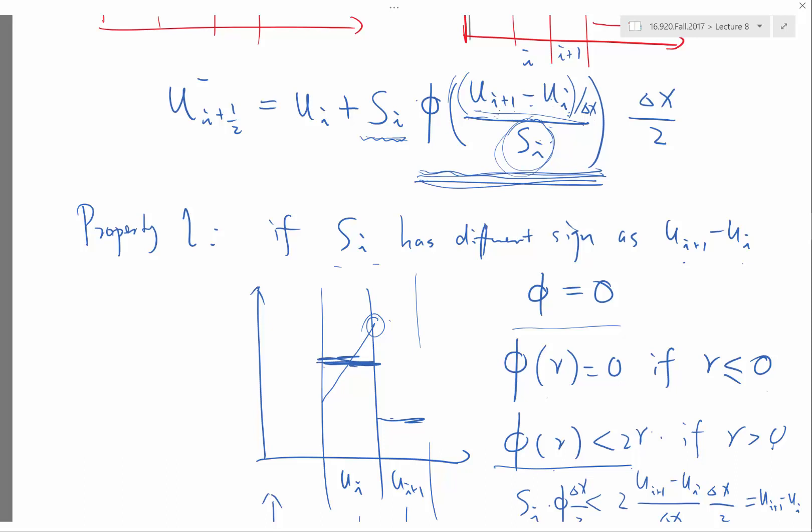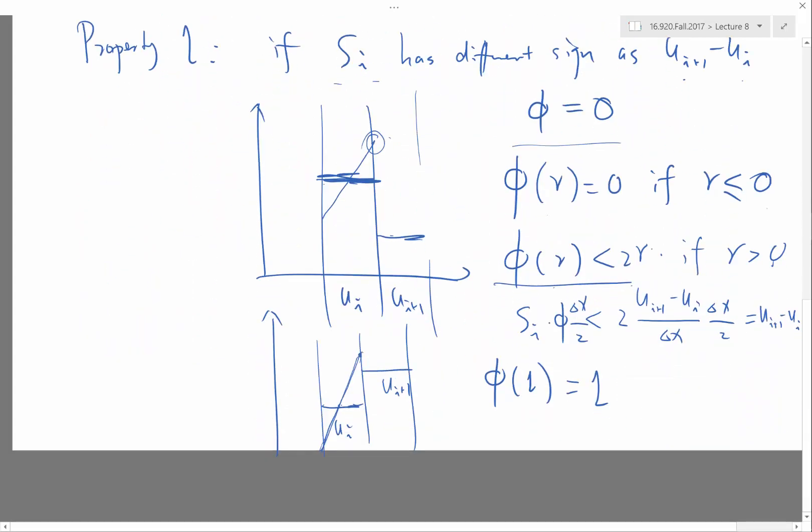you would be approaching a linear function better and better. And having an exact reconstruction at a perfectly linear function is an important property to get a second order accurate scheme. So that basically means that if the values are perfectly linear, you would be exactly using the central scheme.